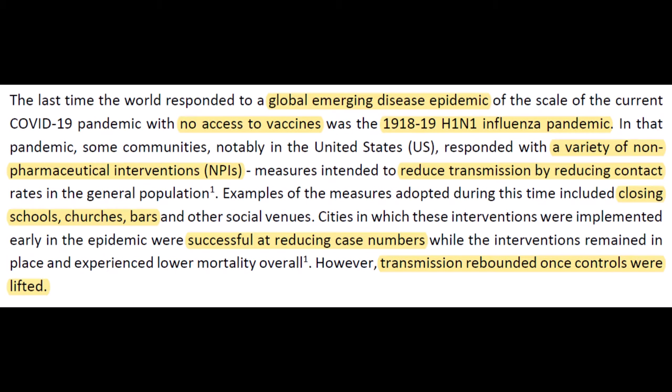Notably, stopping these practices allows the disease to rebound, which we don't want. They outlined two strategies, both with the aim to reduce the reproductive number. The effective reproductive number, R, is how many other people a sick person infects on average in a real-life situation. Contrast this with R0, the basic reproductive number, which assumes everyone is at risk and is used in modeling.